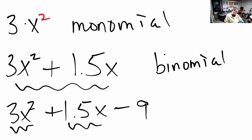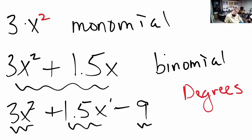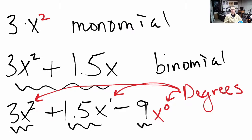Each of these things we call a term, so we've got three terms. They are unique - there's no variable on the 9, the variable on 1.5 is to the first power, and the variable on the 3 has a square on it. We can't combine them because the variables have different powers. What I'm pointing out here is that the degrees are different. We have a 0th degree term, a 1st degree term, and a 2nd degree term. When the degrees on terms are different, you can't combine them together.